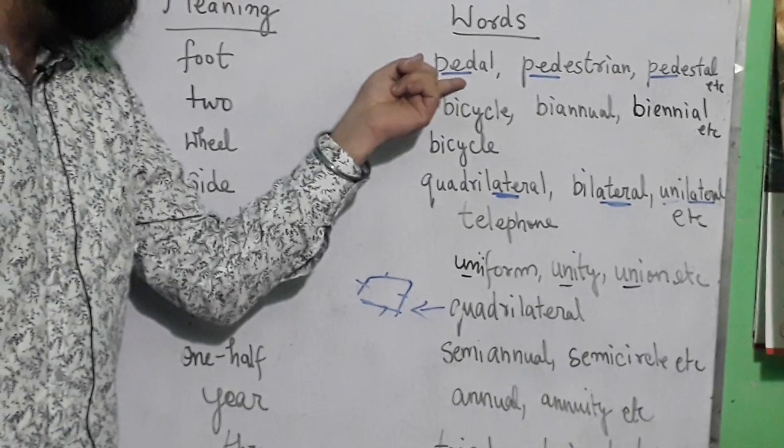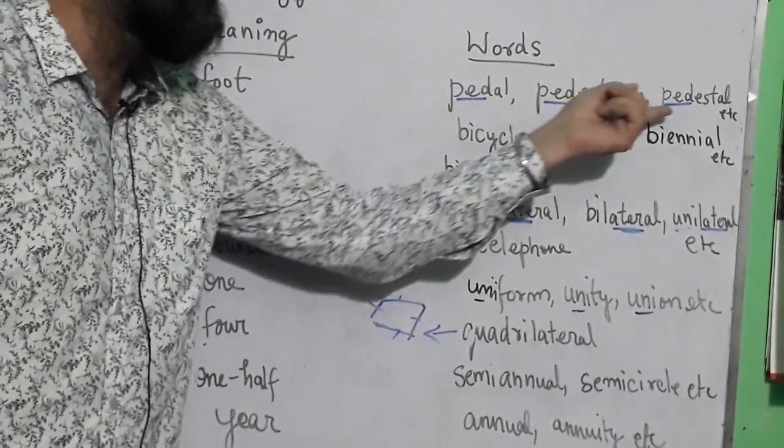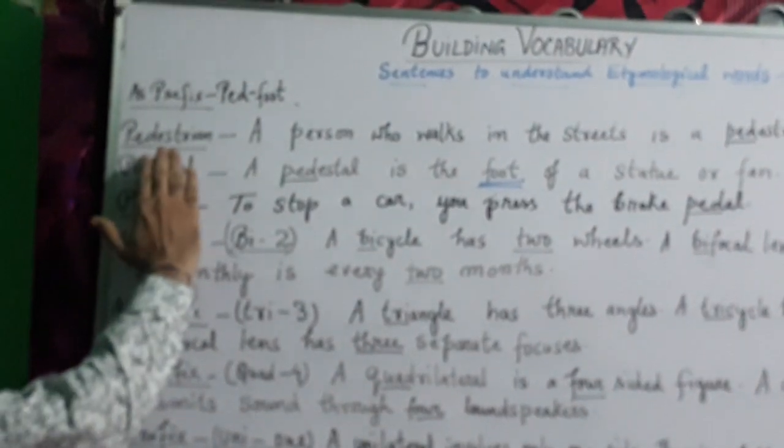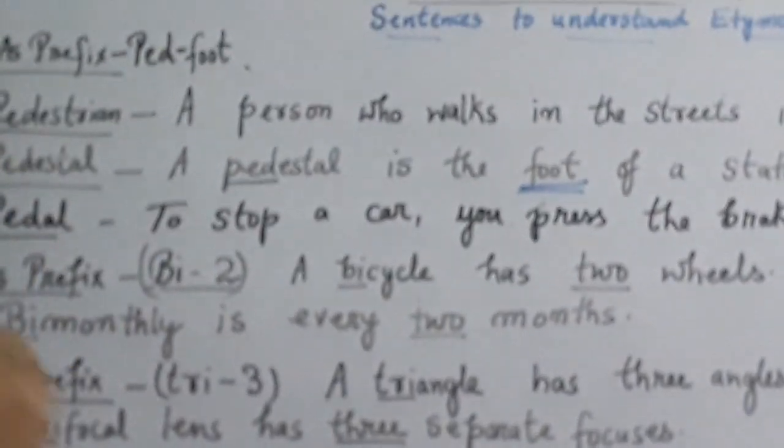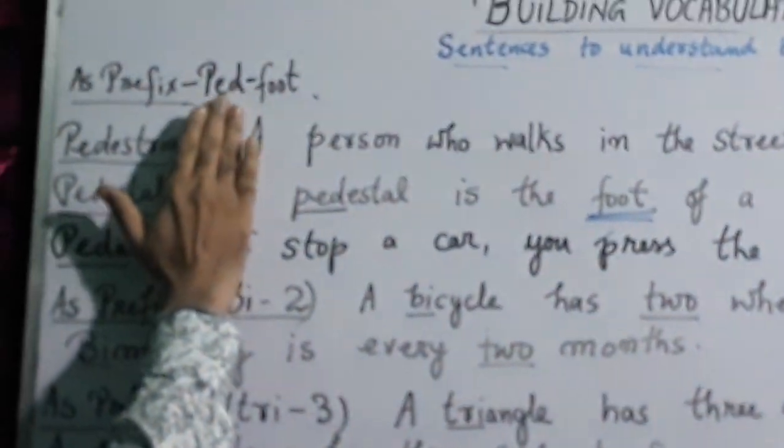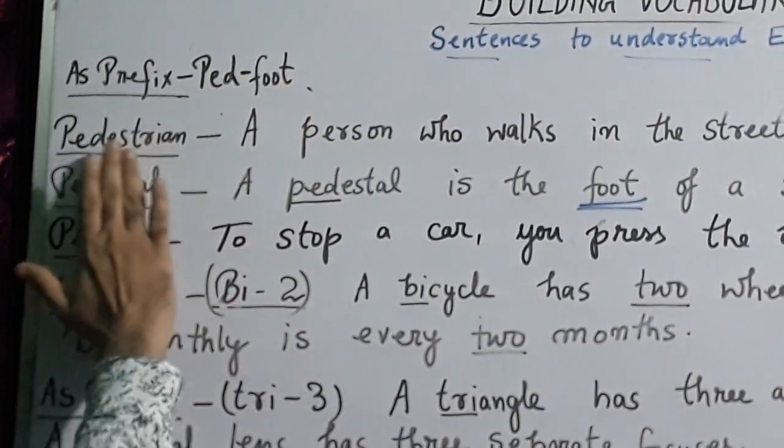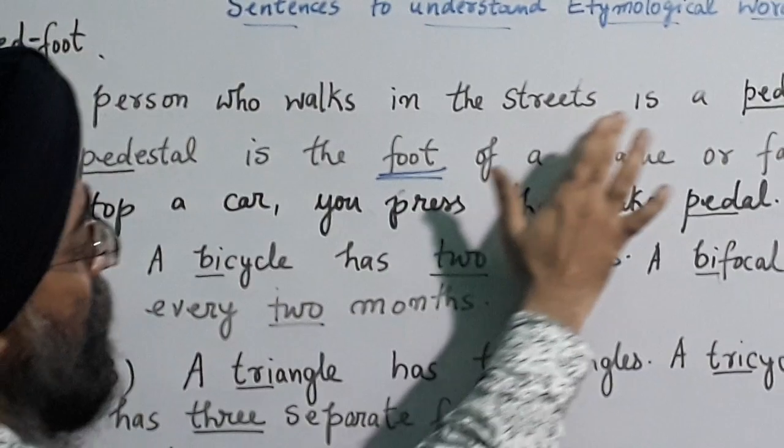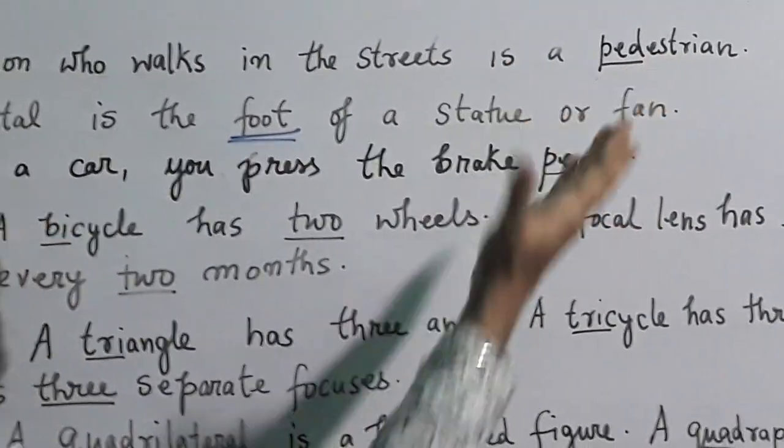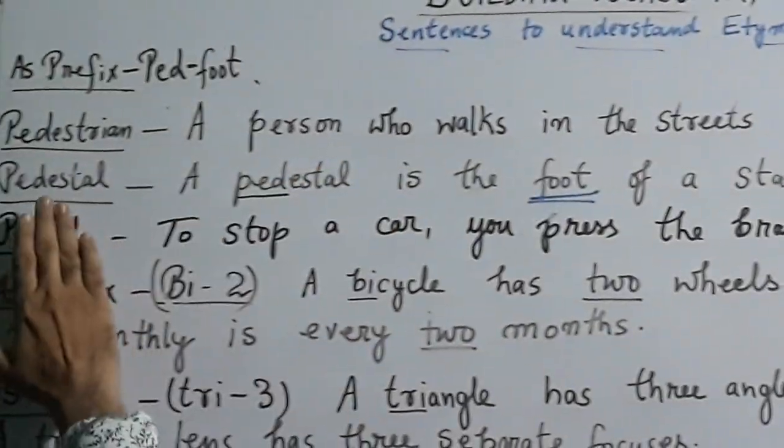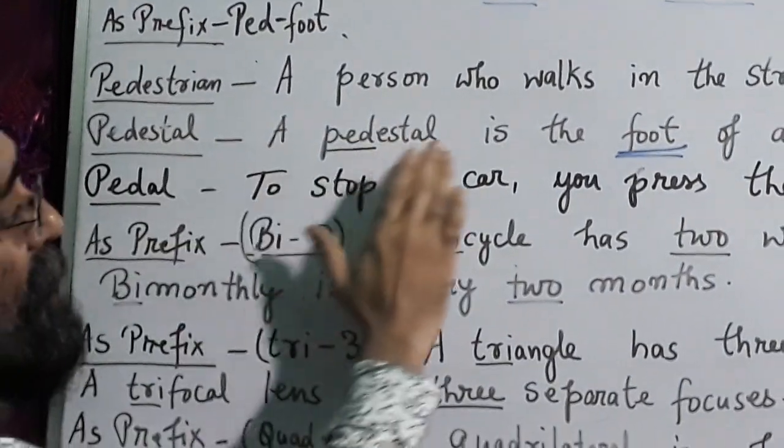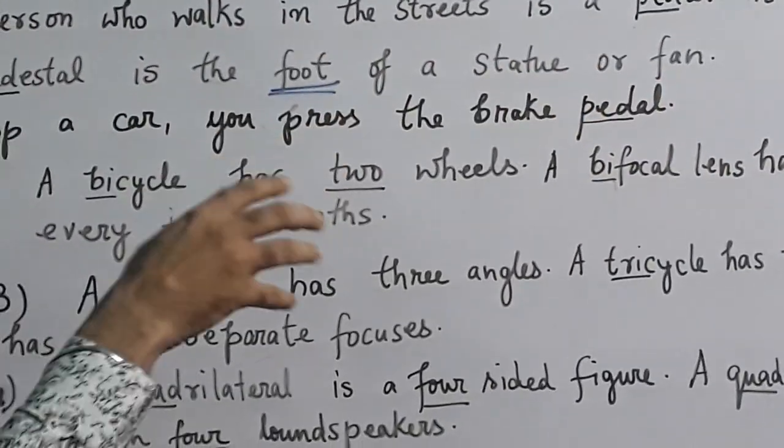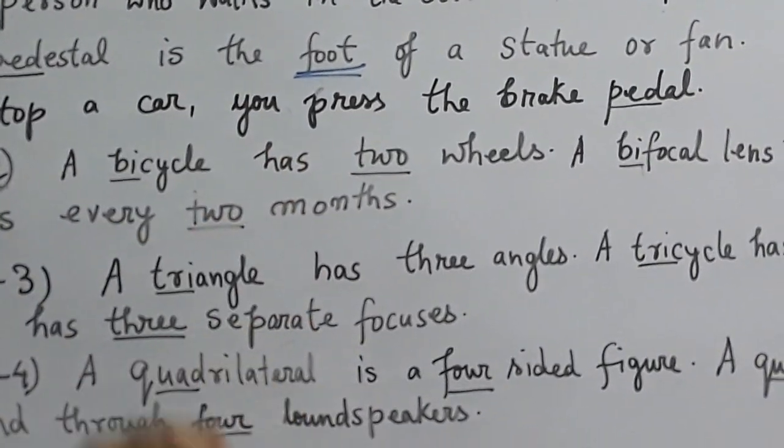I have sentences for you. Pedestrian comes from 'ped', which means foot. A pedestrian is a person who walks in the streets, so the meaning is clear. Next we have pedestal. A pedestal is the foot of a statue or fan, meaning the base or down level of a statue or a fan.